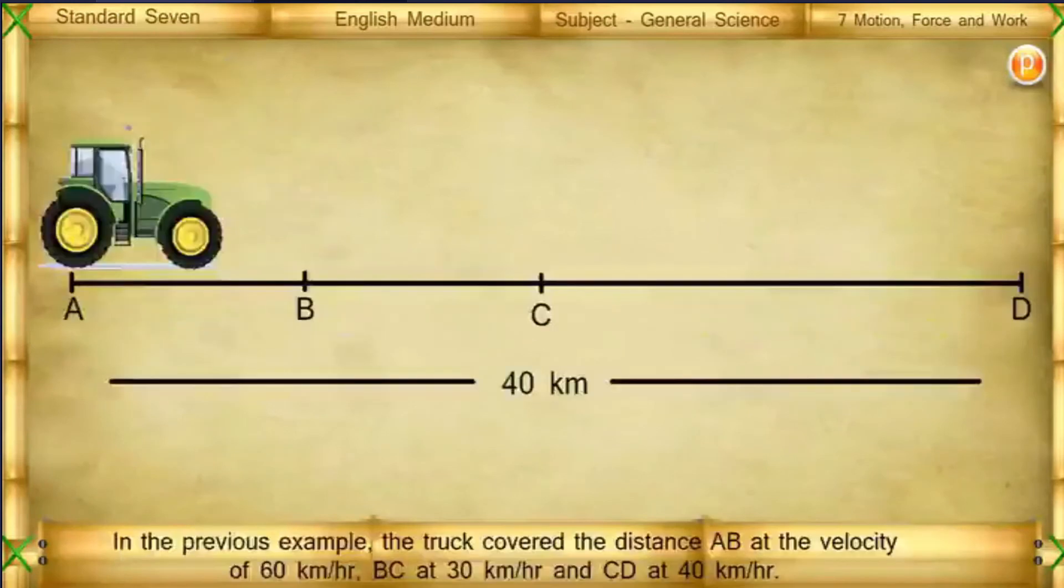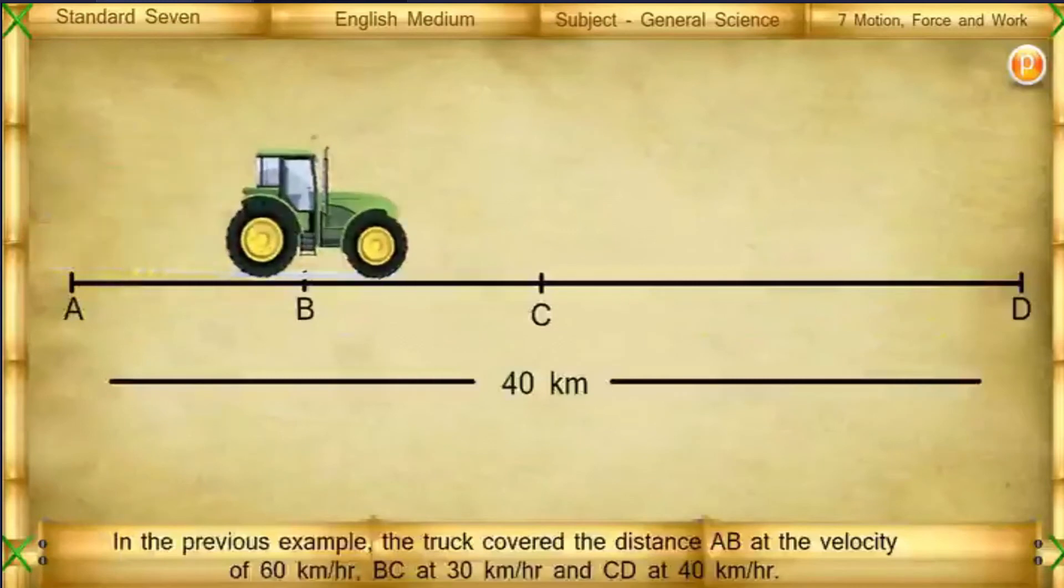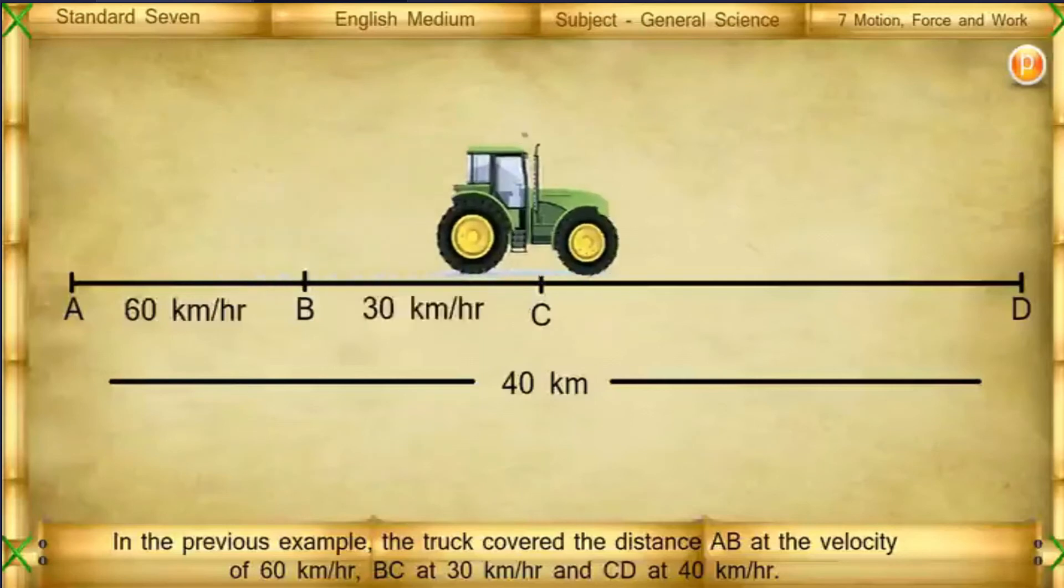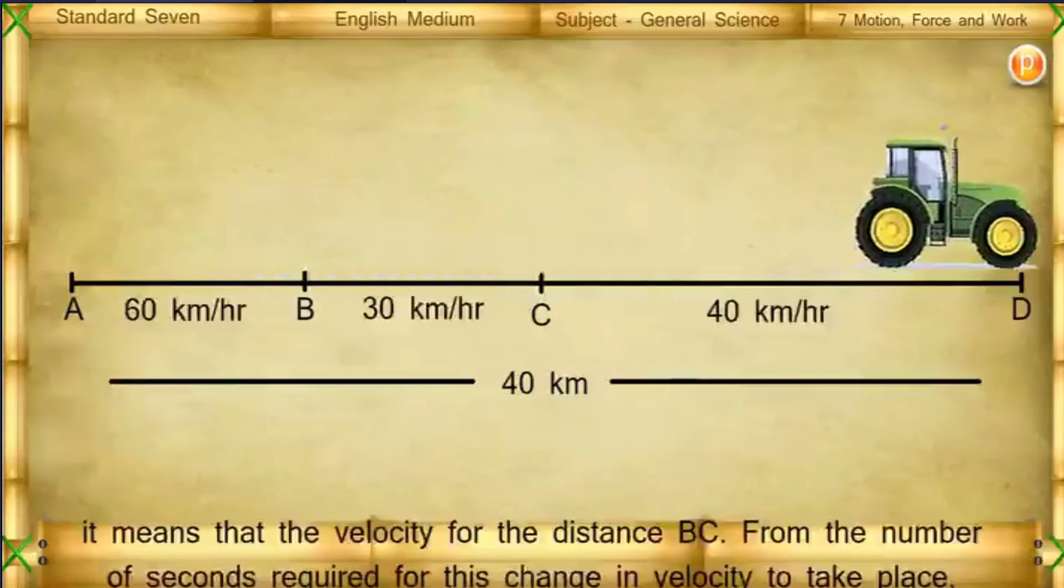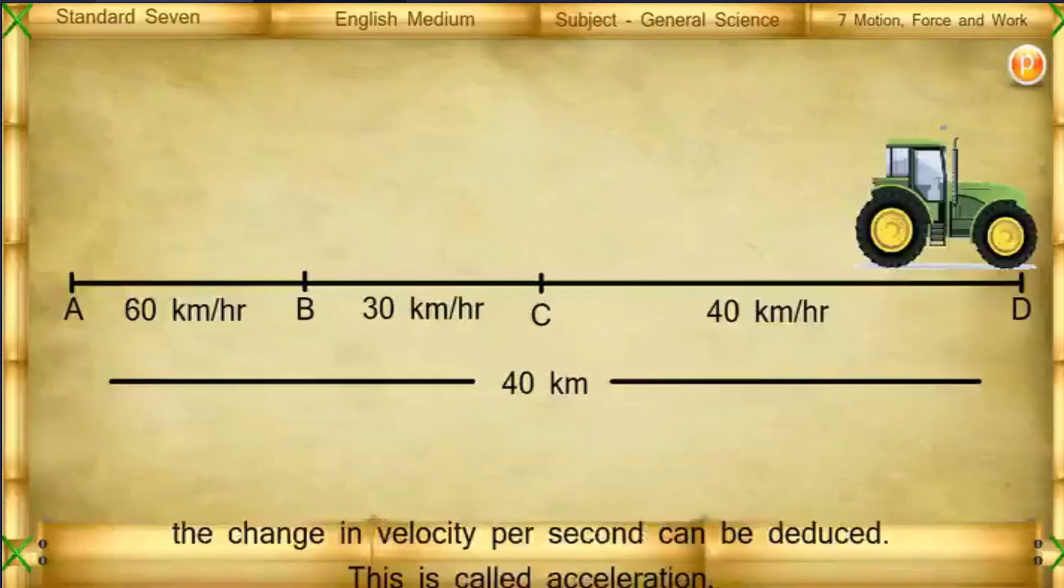Acceleration. In the previous example, the truck covered the distance AB at the velocity of 60 kilometers per hour, BC at 30 kilometers per hour and CD at 40 kilometers per hour. It means that the velocity of the truck changed. From the number of seconds required for this change in velocity to take place, the change in velocity per second can be deduced. This is called acceleration.